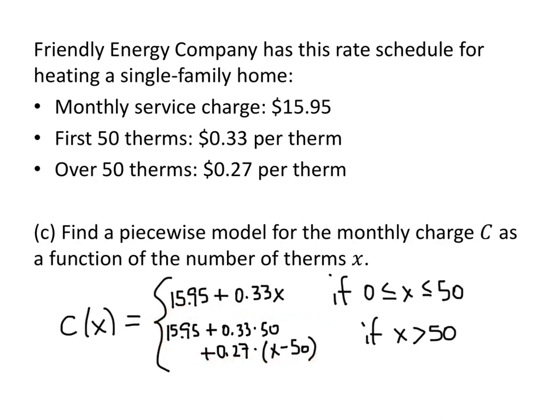Another way to think about this is how we did the previous problem: we already know how much the first 50 therms cost — that was the $32.45 from Part A — and then on top of that we add 27 cents times x minus 50 for the remaining therms. That's just a slight simplification of what we already had. You can see how a piecewise model helps us when we have these different cases for how much we have to pay.